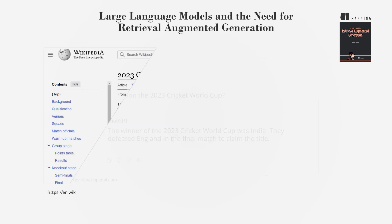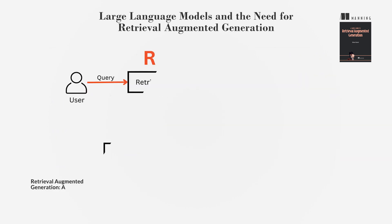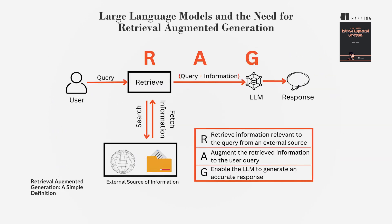However, by adding information from a reliable source like Wikipedia, ChatGPT can generate the correct response. This illustrates the core concept of RAG: searching and retrieving relevant external information, augmenting it as input to the LLM, and generating a more accurate result.